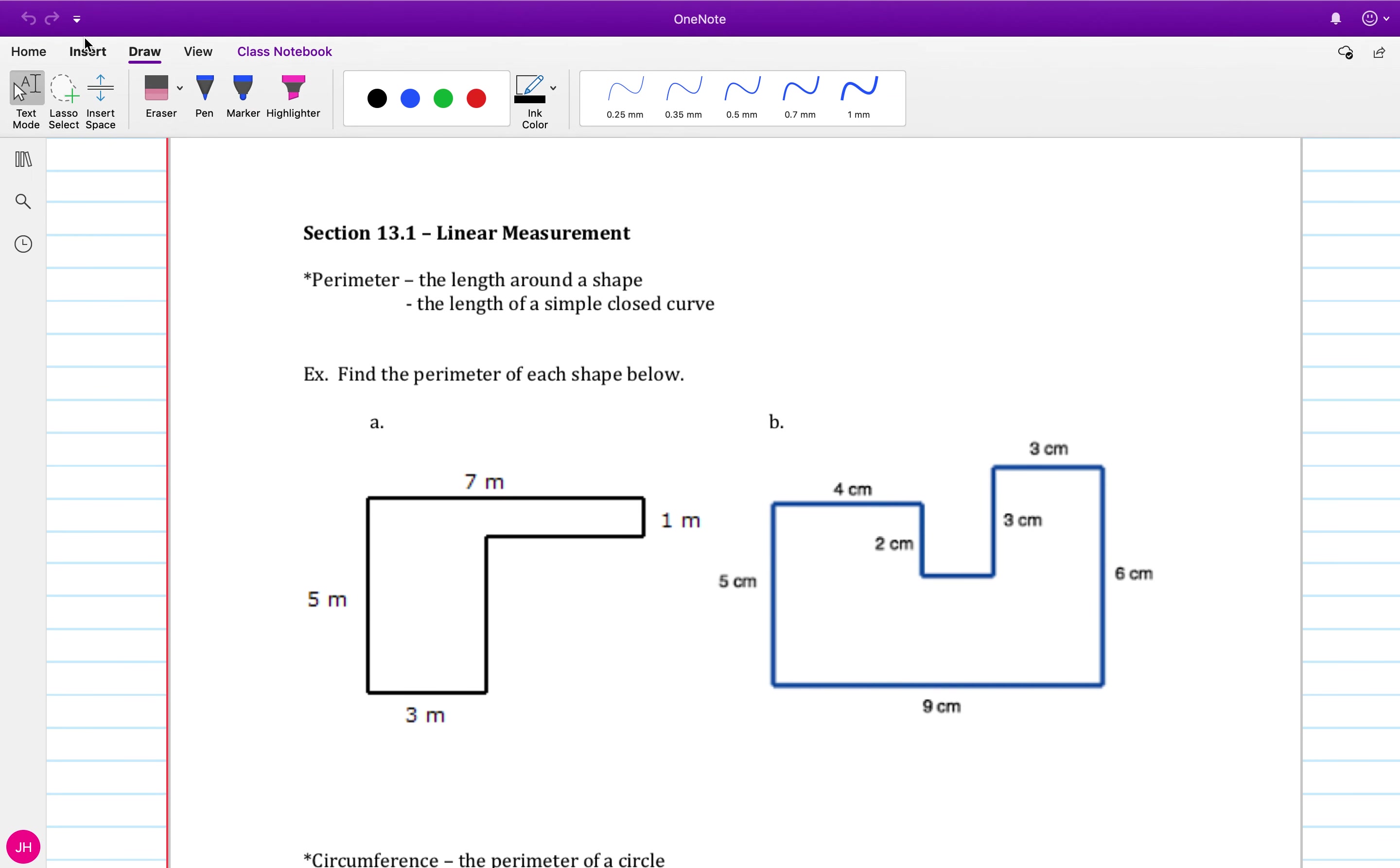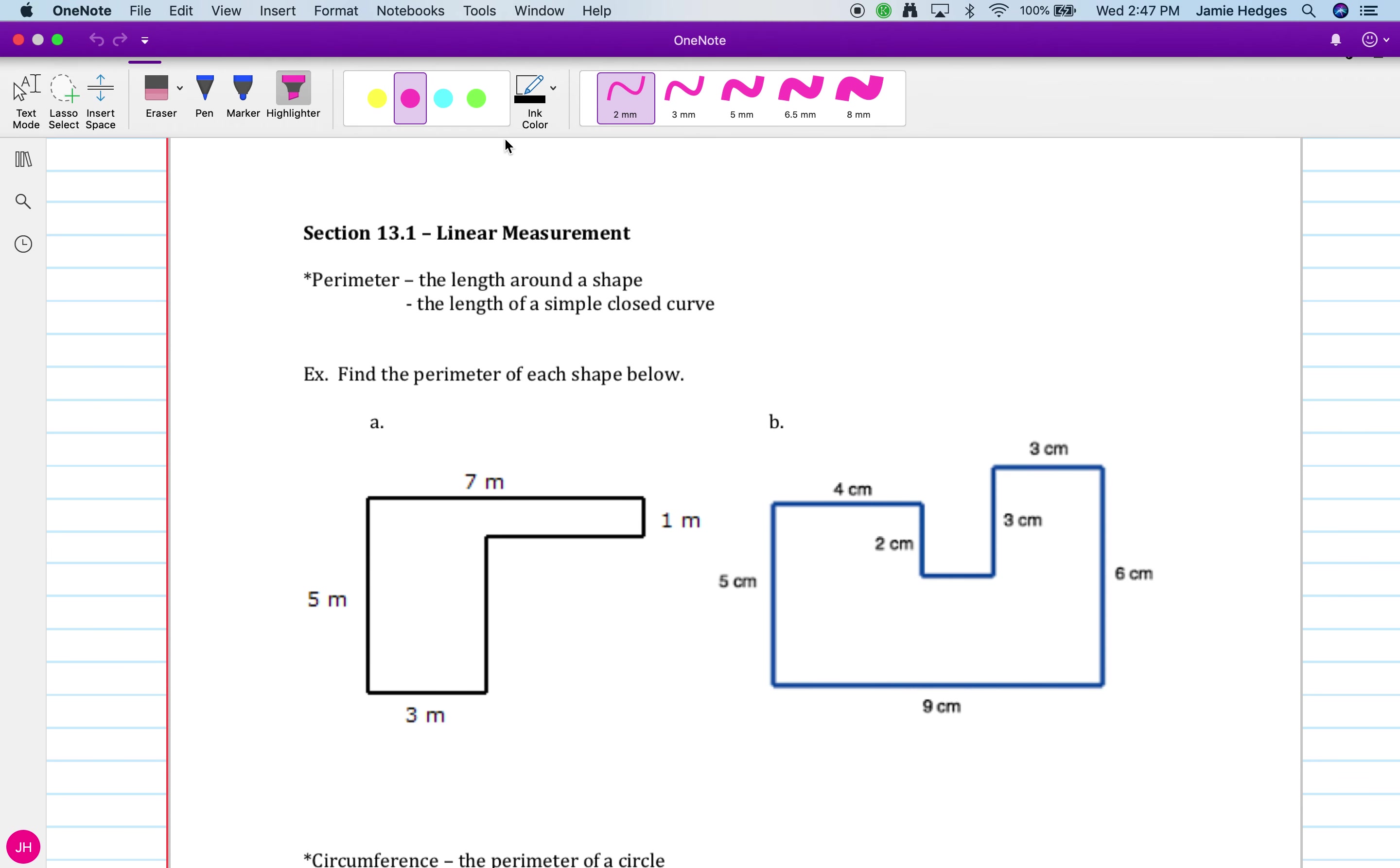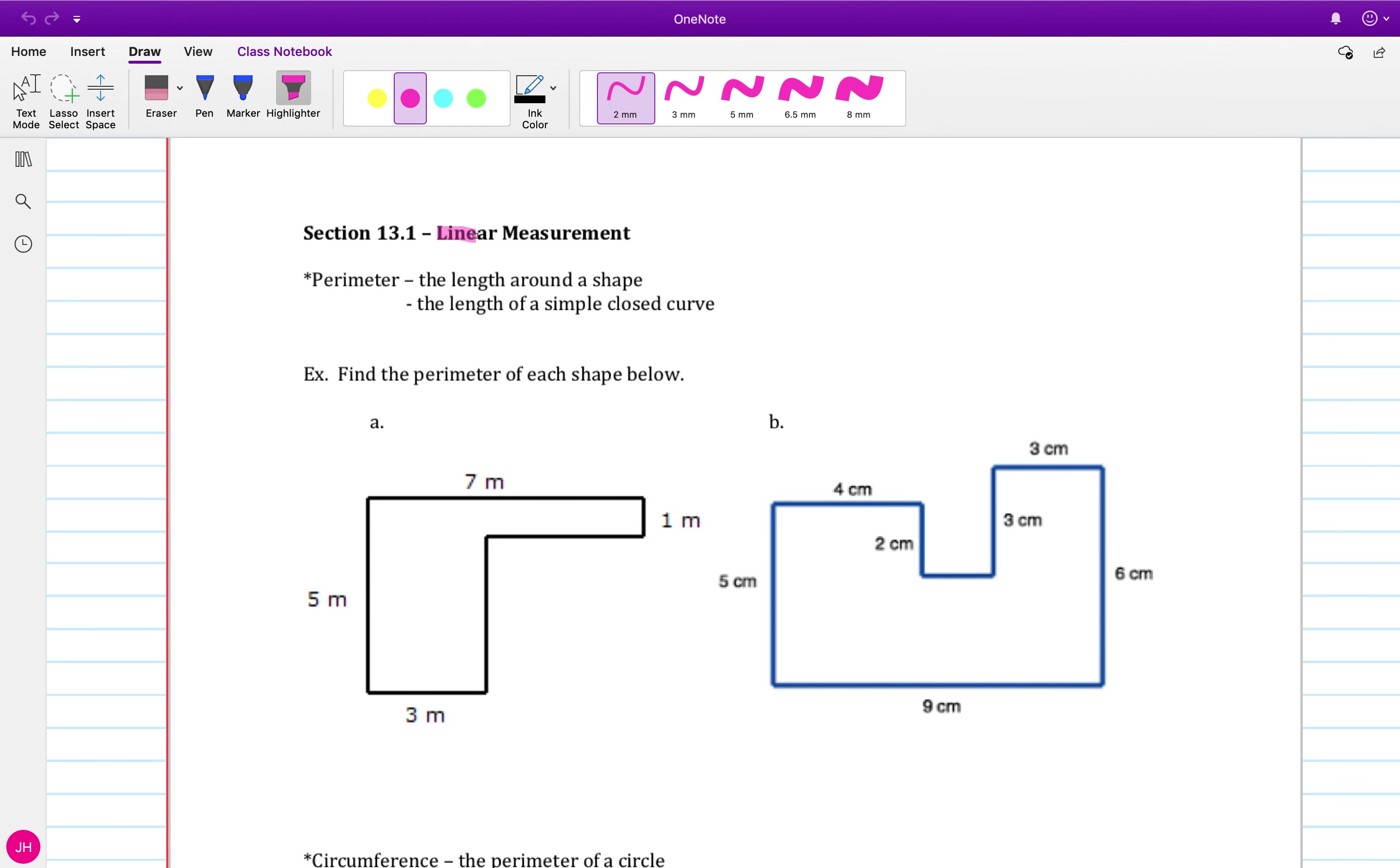So in this video, I want to start talking about linear measurement. Linear's root word is line. So we're basically measuring things that are flat, that we can make up with lines. So we're not going to be measuring like volume, for instance, and that's how much water we could pour inside of a cup. We're going to be measuring flat objects.